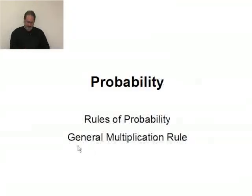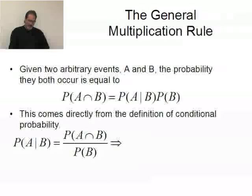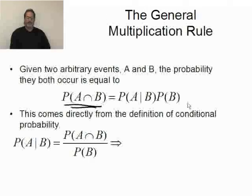Let's take a look now at the idea of the general multiplication rule. Given two arbitrary events, A and B, the probability that they both occur, the probability of A and B, is equal to the probability of A given B times the probability of B.